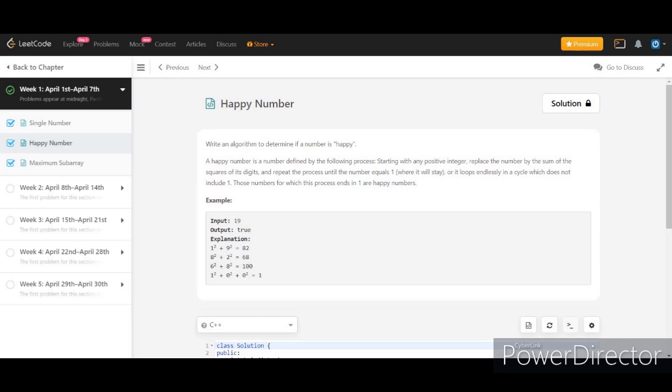The given example is 19. What we have to do is take the sum of squares of the digits. In this case, the digits are 1 and 9, and if you take the square, 1² + 9² equals 82.